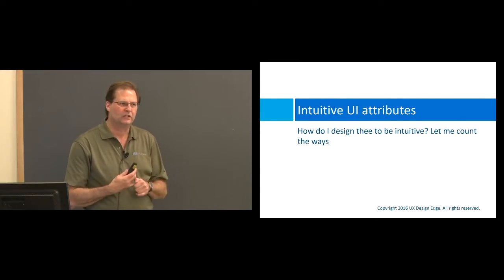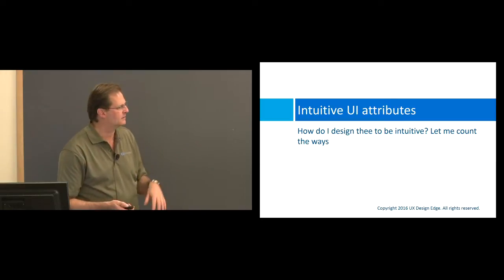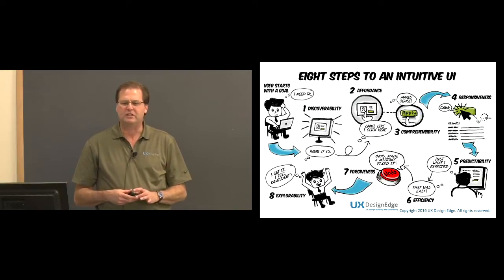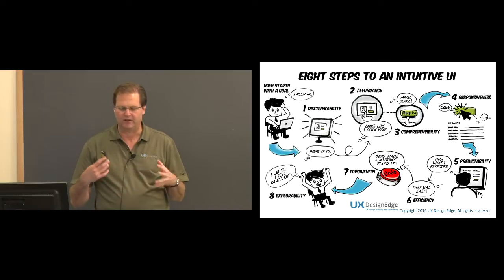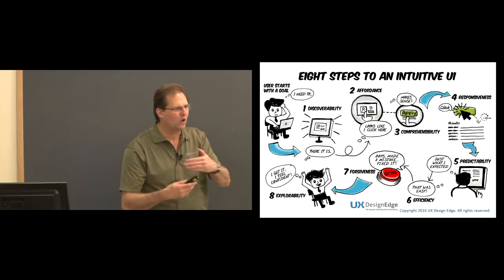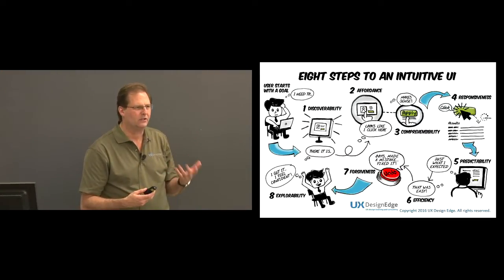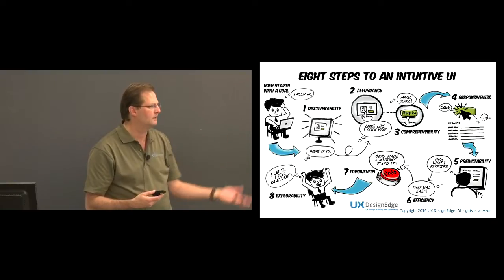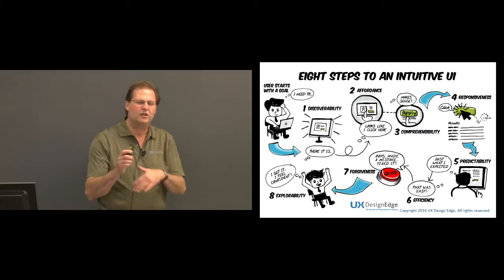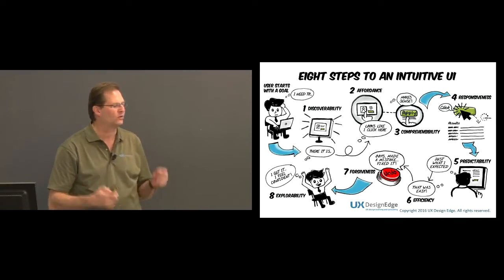Now we know what it means to be intuitive. I want to figure out how to make a UI intuitive — the definition only tells us if we have it or not, it doesn't tell us how to make it so. What I want to present is what I'm calling the eight steps of an intuitive UI. The interaction lifecycle describes what steps people go through during an interaction. The first thing we do is start with a goal — as a user, I want to accomplish something, like getting an Uber downtown.